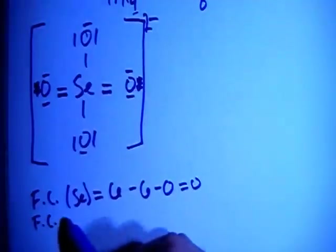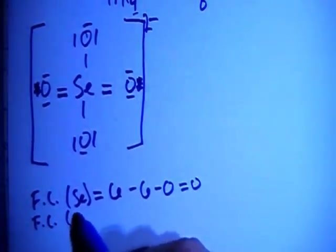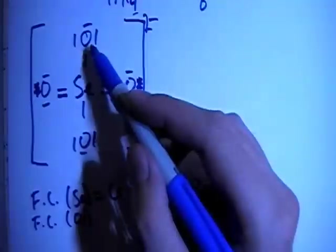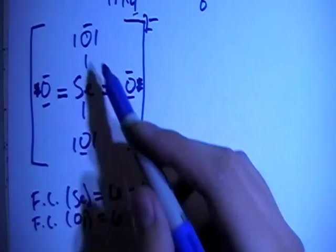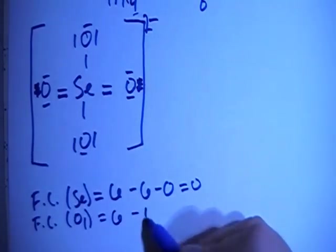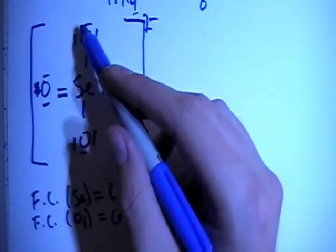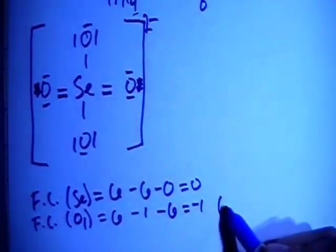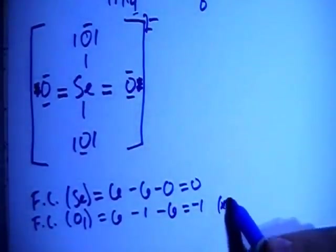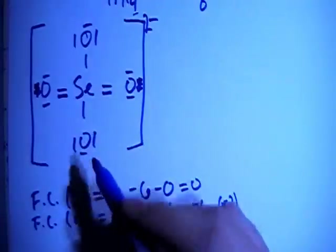The formal charges of the oxygens with a single bond, O sub 1, that's 6 valence brought in minus 1 bond for each oxygen, minus 6 non-bonding for each oxygen for a minus 1 charge. And then you multiply that times 2 because there's 2 of those oxygens.